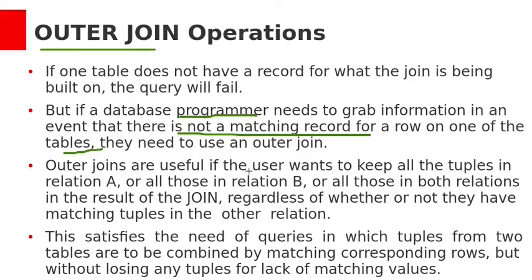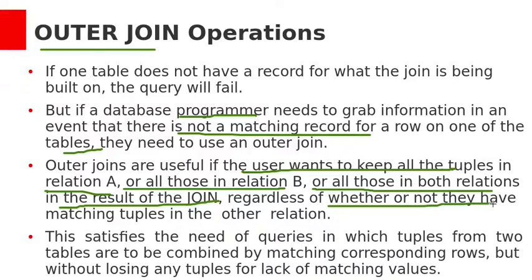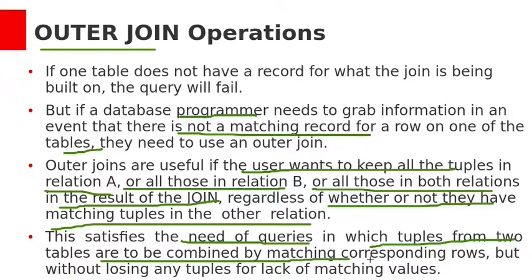Outer joins are useful if the user wants to keep all the tuples in relation A, or all those in relation B, or all those in both relations, in the result of a join, whether or not they have matching tuples in the other relation. Outer joins satisfy the need of queries where tuples from two tables are combined by matching corresponding rows, but without losing any tuples for lack of matching values.